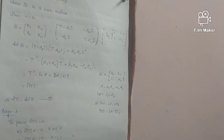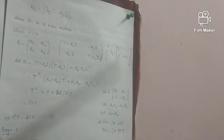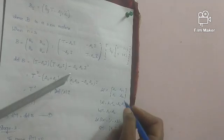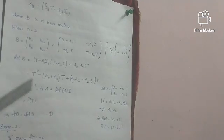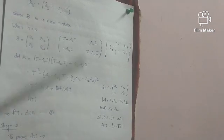The determinant is computed as the two-by-two multiply and subtract. That gives: T² minus (a11 + a22)·T plus (a11·a22 minus a21)·I. The matrix A has entries a11, a12, a21, a22. The determinant of A is a11·a22 minus a12·a21. The trace of A is the sum of the diagonal elements: a11 plus a22. So the expression becomes T² minus trace(A)·T plus det(A)·I.